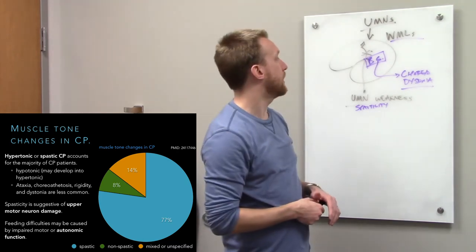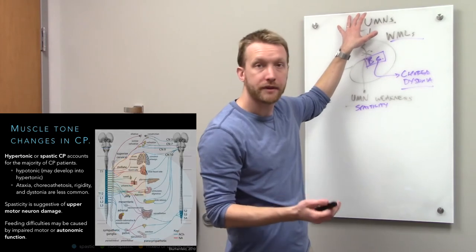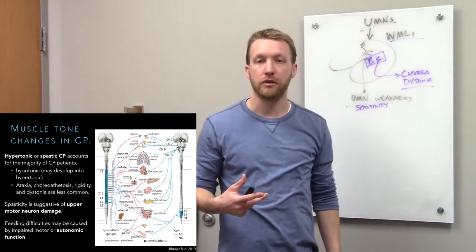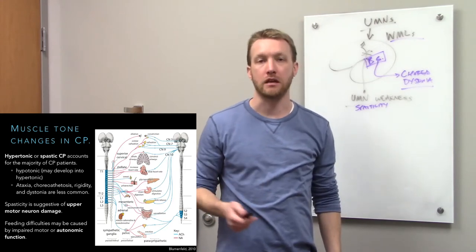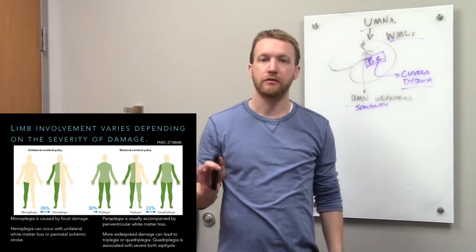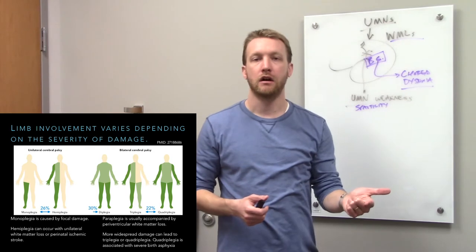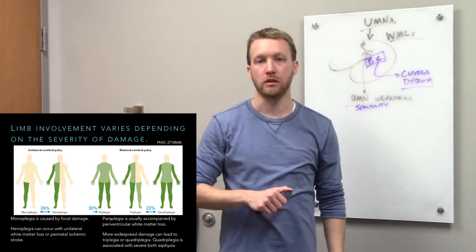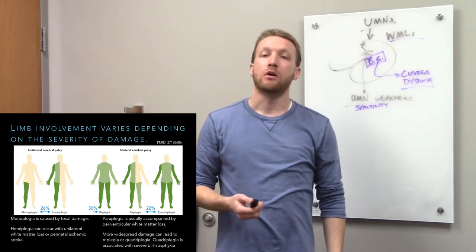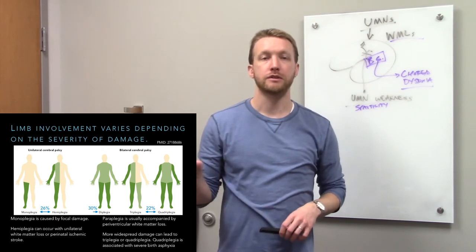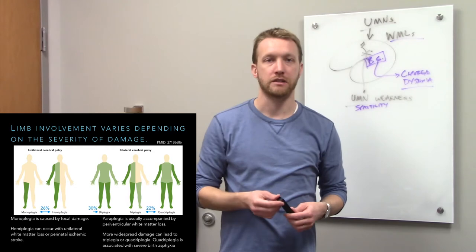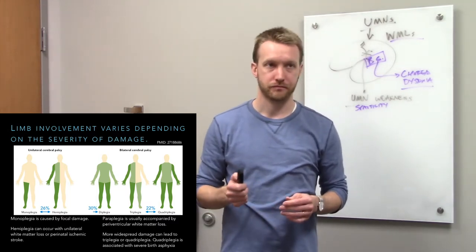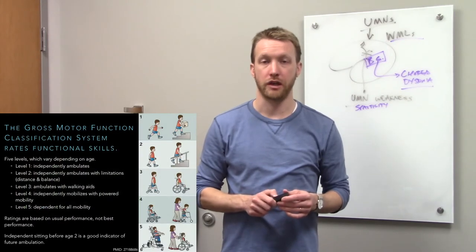Cerebral palsy also affects the autonomic nervous system, potentially causing issues with salivation, GI function, and feeding — compounded by poor coordination of limbs. Limb involvement varies depending on the location and size of lesions; anywhere from one to four limbs can be affected. More widespread damage leads to more widespread motor dysfunction. The most common presentation is diplegia — paralysis in two limbs — though this varies by injury location and size.